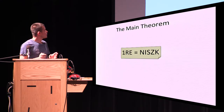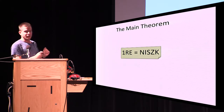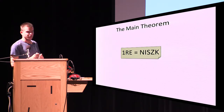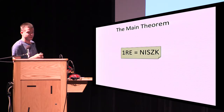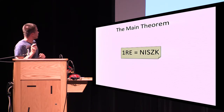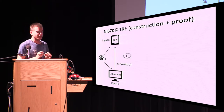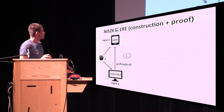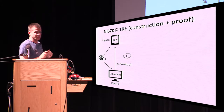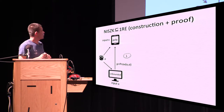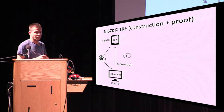This is our main theorem: we prove that one-sided randomized coding equals the non-interactive statistical zero-knowledge class. Let's go into the proof. We start by proving that NISC is a subset of 1RE. We take any NISC system for some language L and want to construct a one-sided randomized coding for this language.